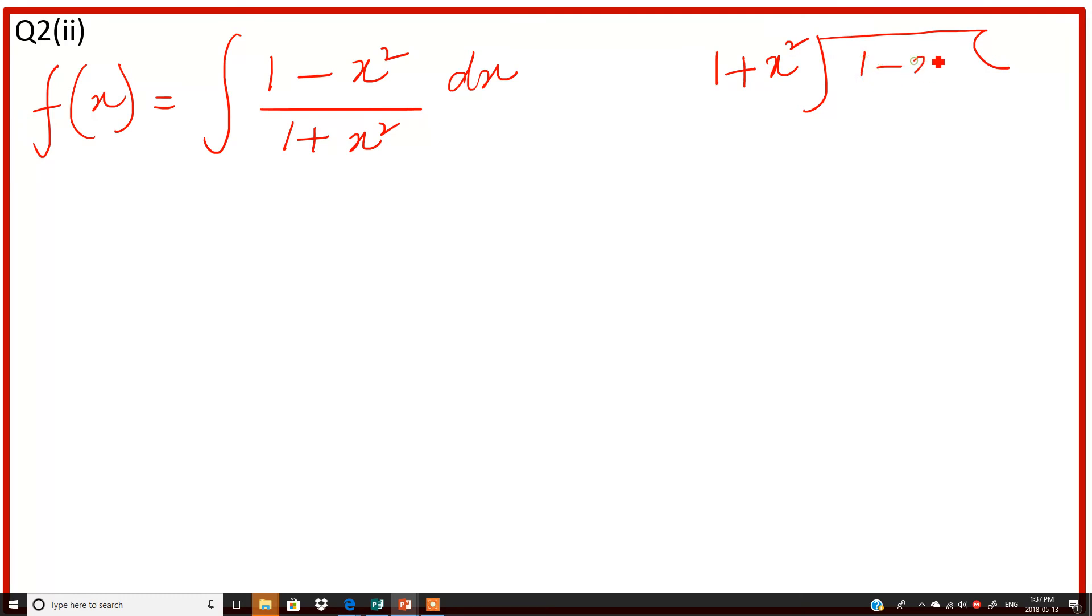Write (1 - x²) as the dividend and (1 + x²) as the divisor. You have to divide (1 - x²) by (1 + x²), which means numerator by denominator, with respect to x.